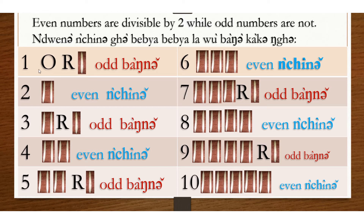1 is not divisible by 2, so it is odd. When you divide 1 by 2, you have 0 remainder 1, so 1 is odd.